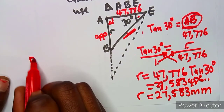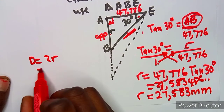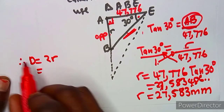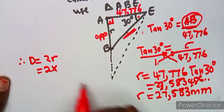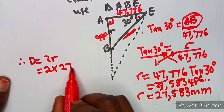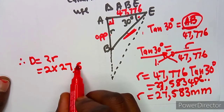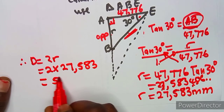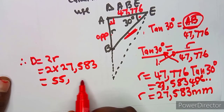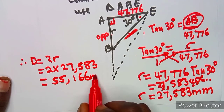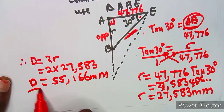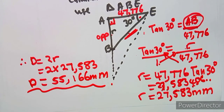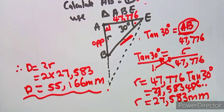Since diameter equals two times radius, our diameter is 2 times 27.583, which gives us 55.166 millimeters. That is the diameter of the roller.